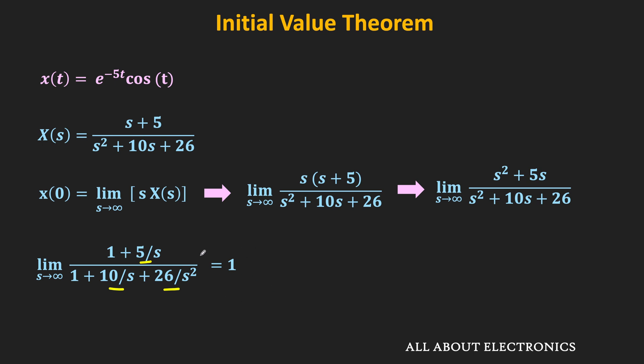So using the initial value theorem, we found the value of this time-domain function at t = 0 to be 1. We can verify this from the time-domain expression: substituting t = 0 gives e^0 · cos(0) = 1 · 1 = 1. This initial value theorem is very useful when we do not know the time-domain expression of a function but do have its Laplace transform — using this theorem, we can easily find the value of that function at t = 0.